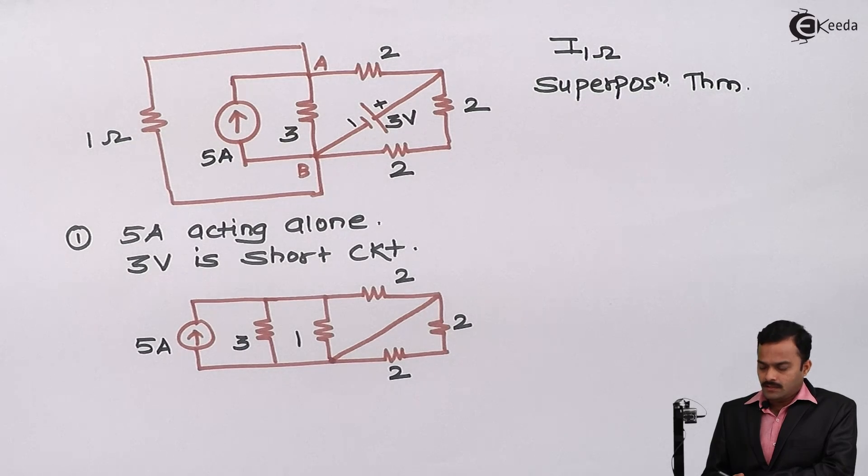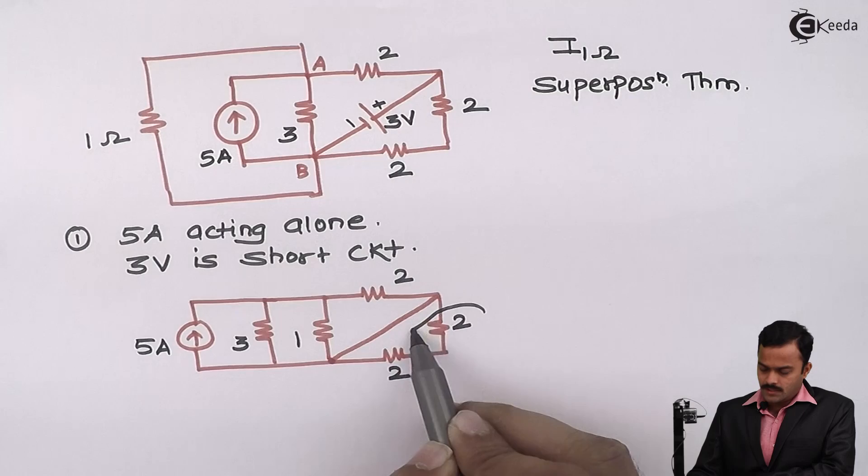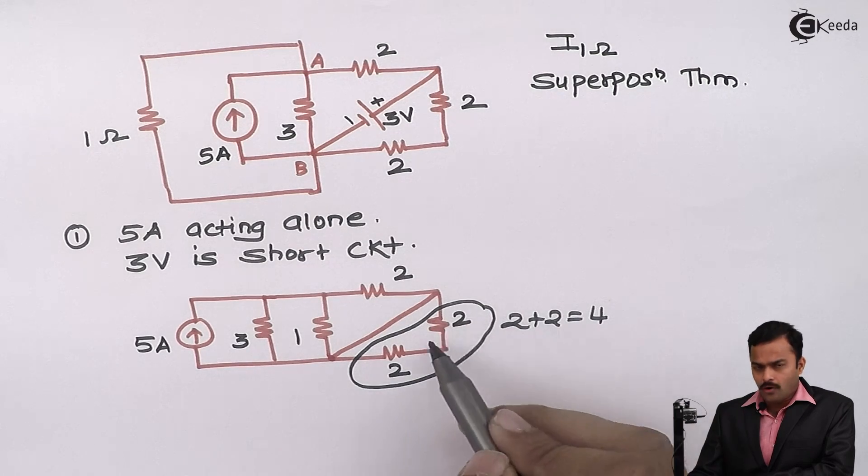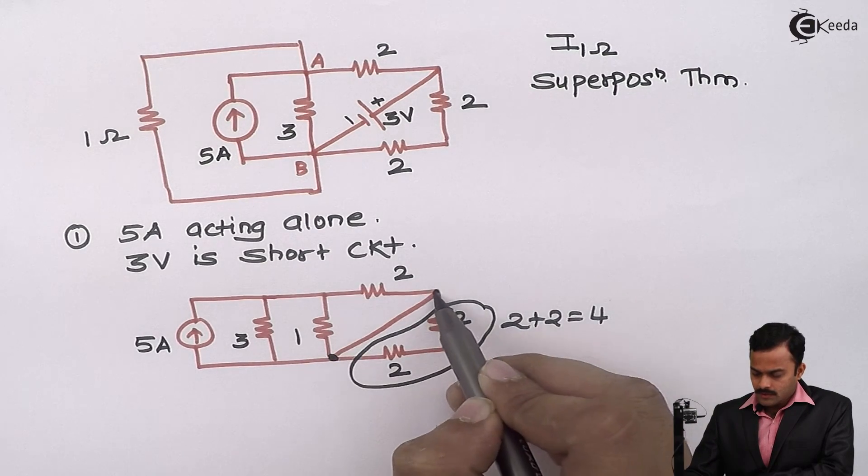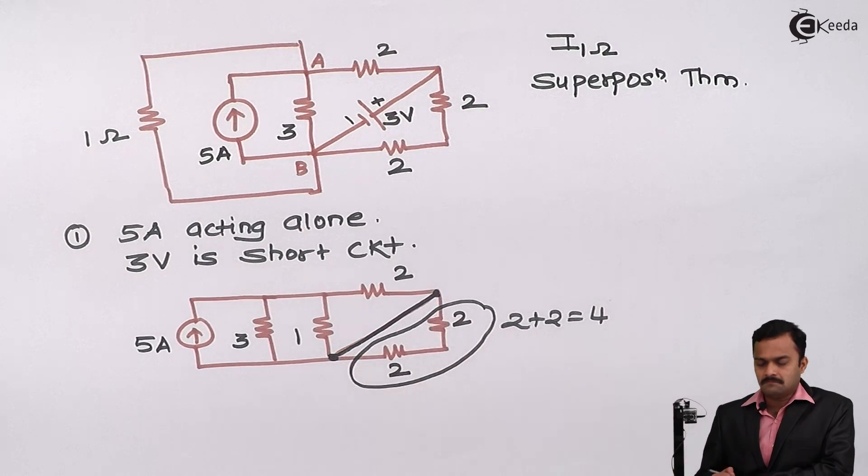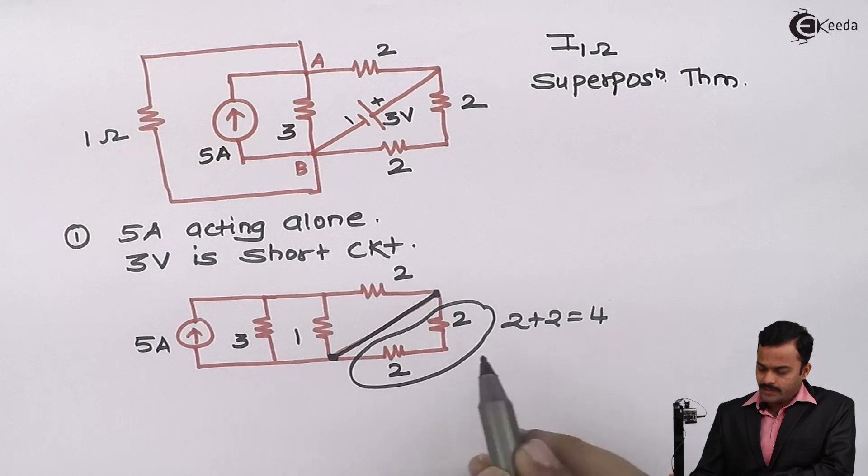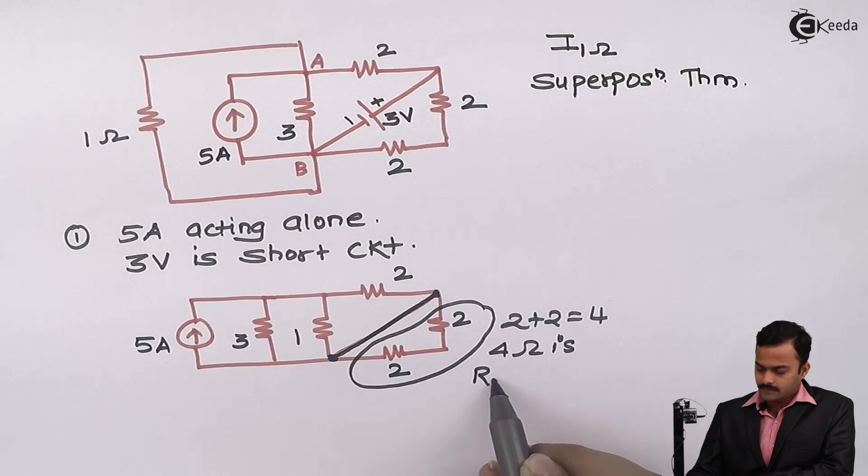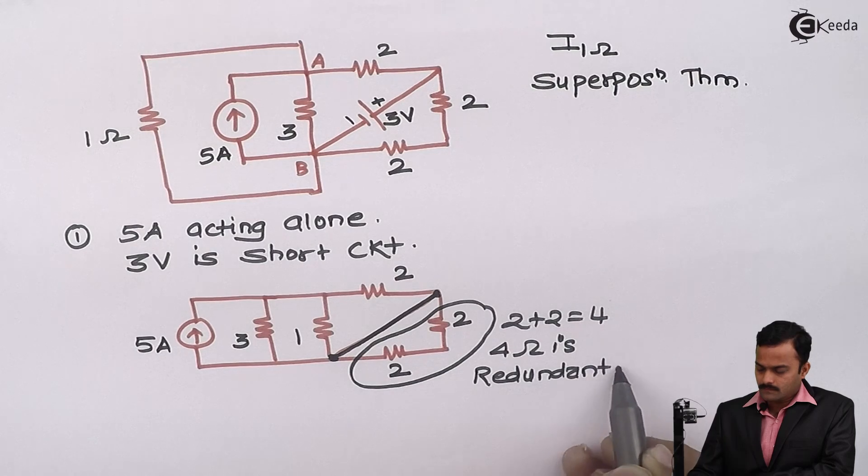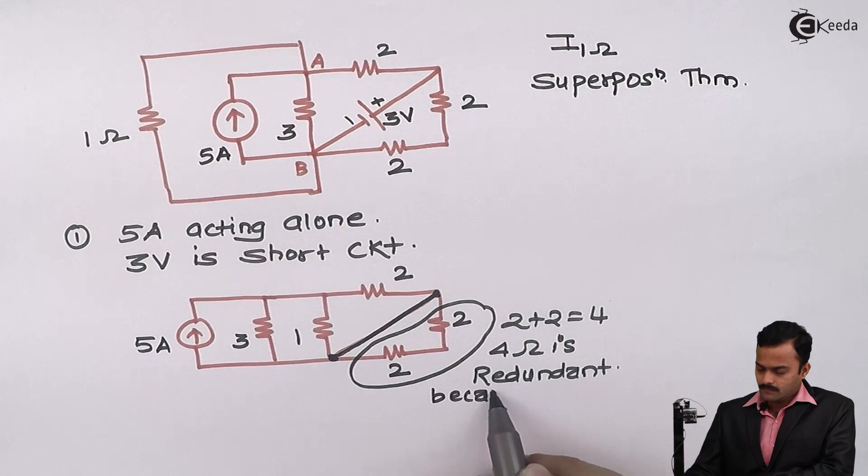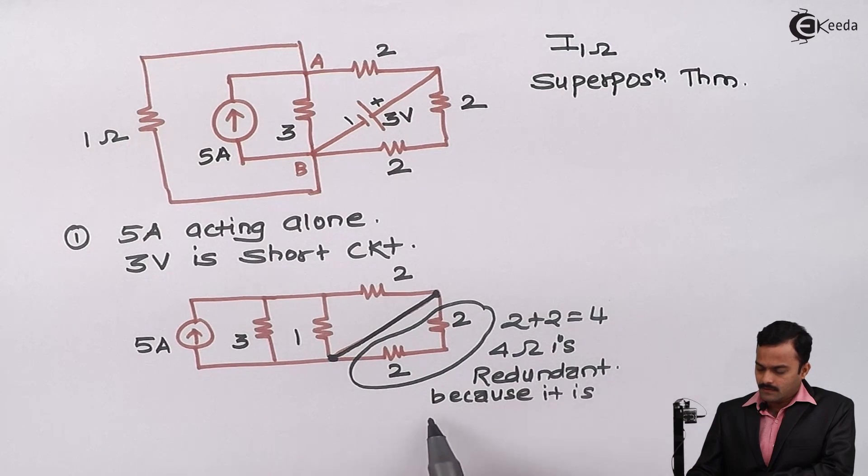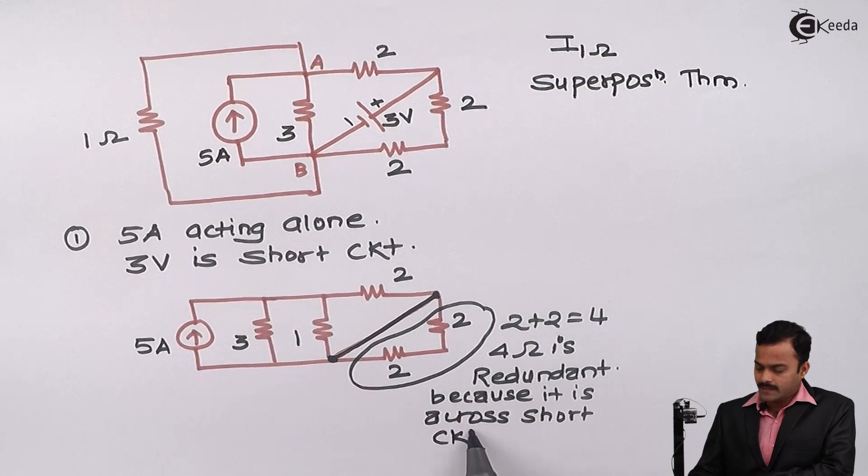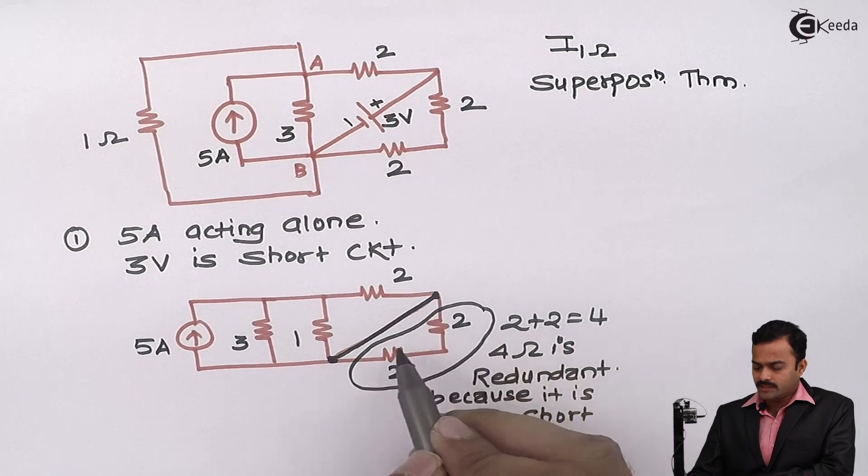Now, if you see properly, this 2 plus 2 will become 4, but this 4 is coming across this short circuited link. So actually it is redundant. I can say 2 plus 2 equal to 4 ohm is redundant because it is across short circuit. It will get bypassed. Let us remove this part in a circuit.